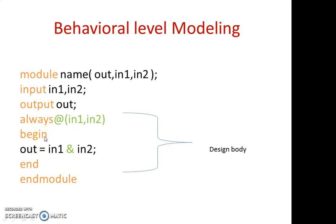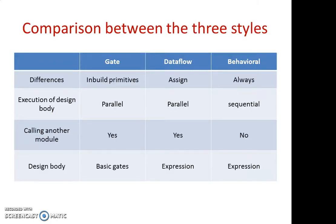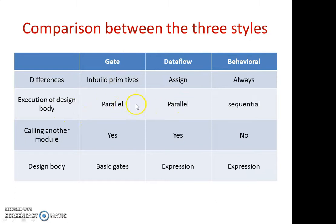Now let us see the basic differences found across the different types of coding. The major difference in gate level modeling is it uses inbuilt primitives. In data flow modeling, you will always see an 'assign' on the left-hand side for output variables. In behavioral description, it consists of an 'always' block. When it comes to execution of the design body, gate level and data flow modeling execute parallelly, while behavioral executes sequentially — meaning one line after the other inside the design body is executed. In data flow and gate level modeling, all lines are executed parallelly.